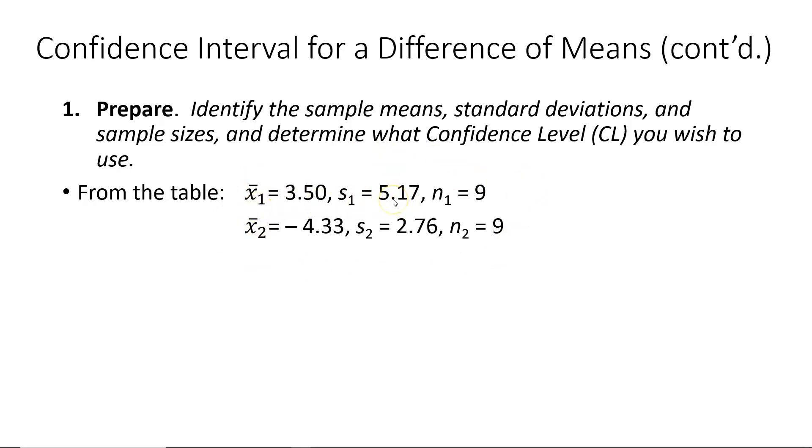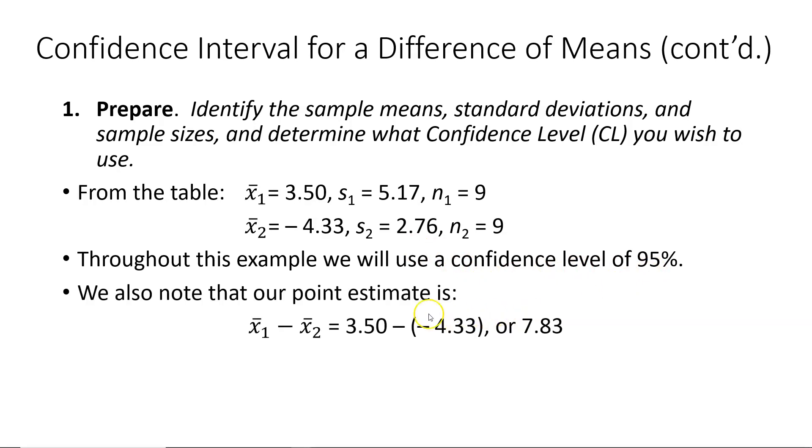Remember, group one is the ESCs group. Group two is the control group. The next thing we do is determine the confidence level we were given in the problem statement, that is 95%. And then the last thing we need to do in the prepare step is to calculate our point estimate. That is the difference between the sample means. In this case, the value is 7.83.